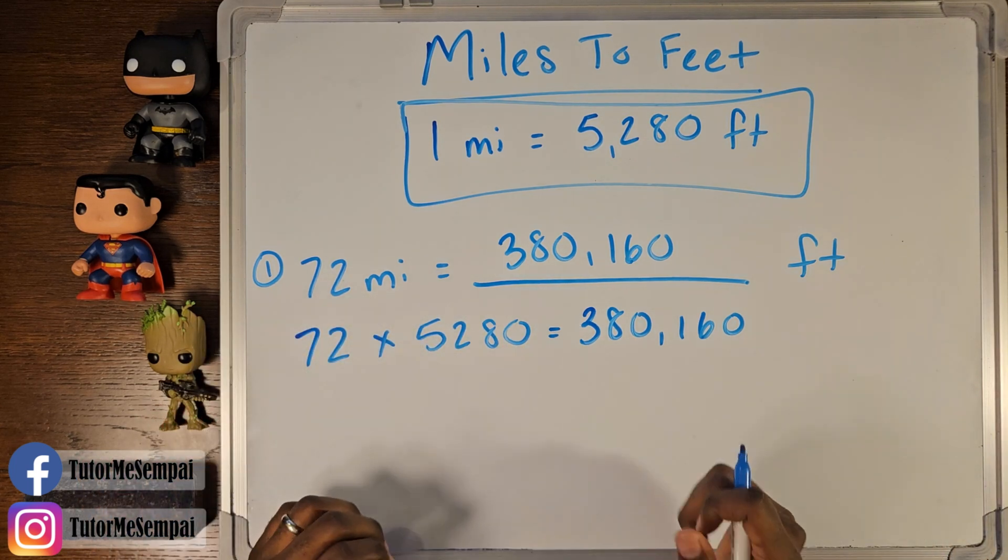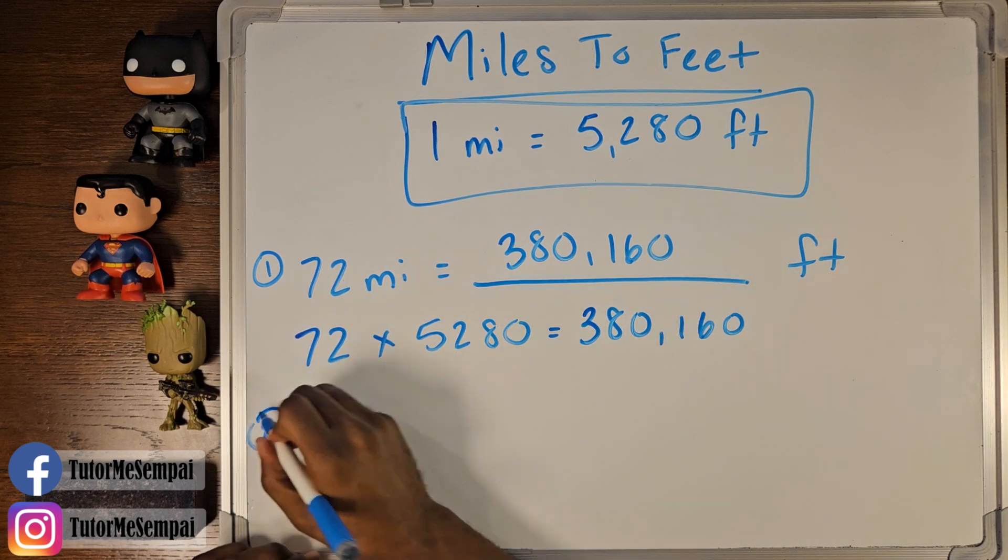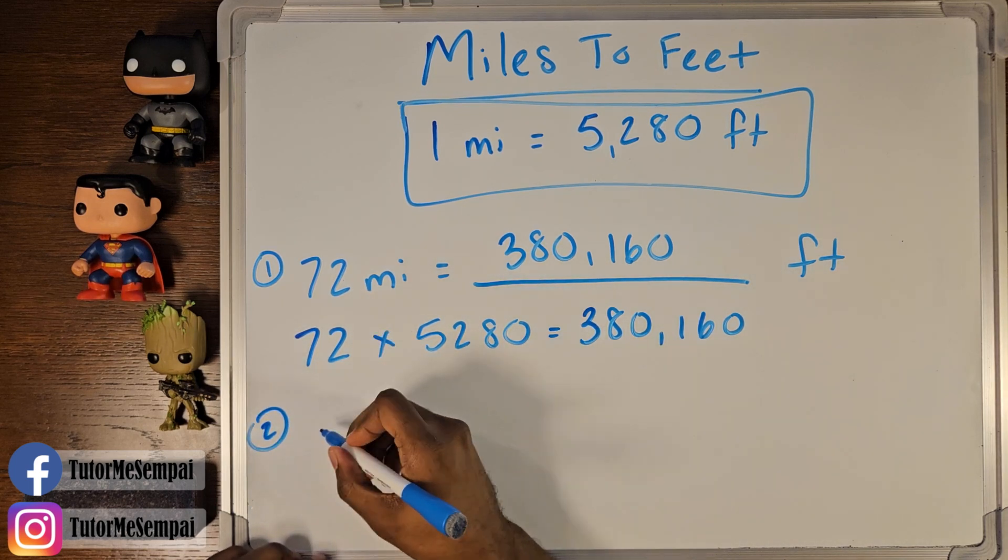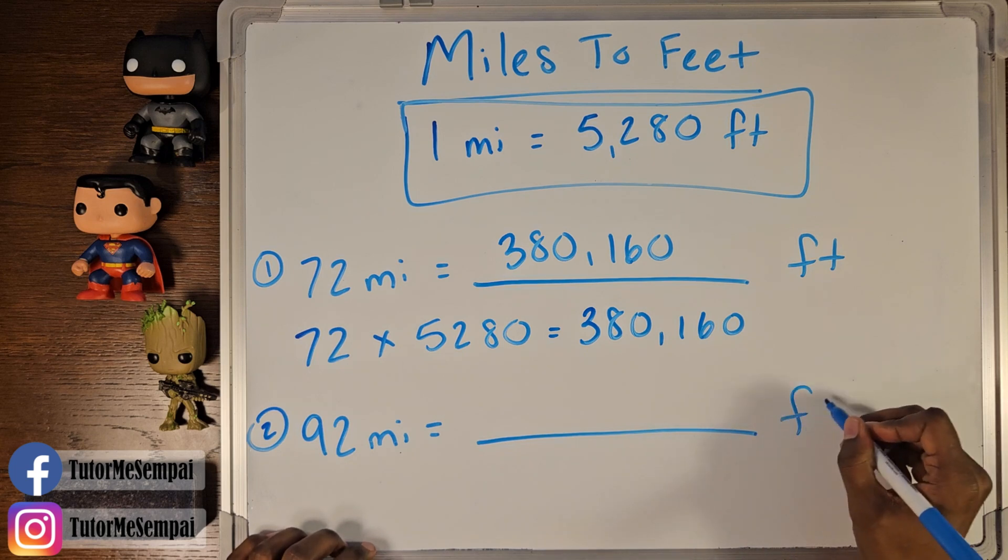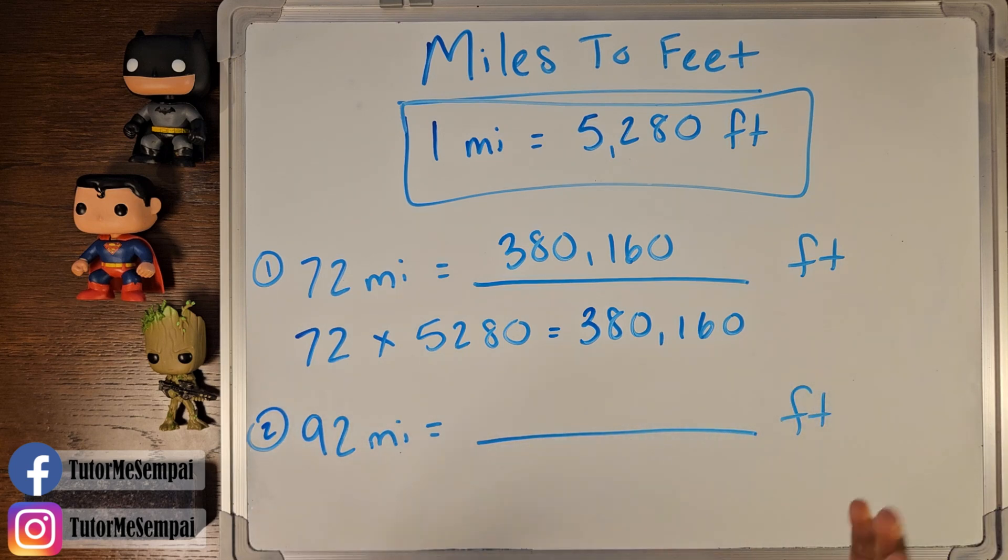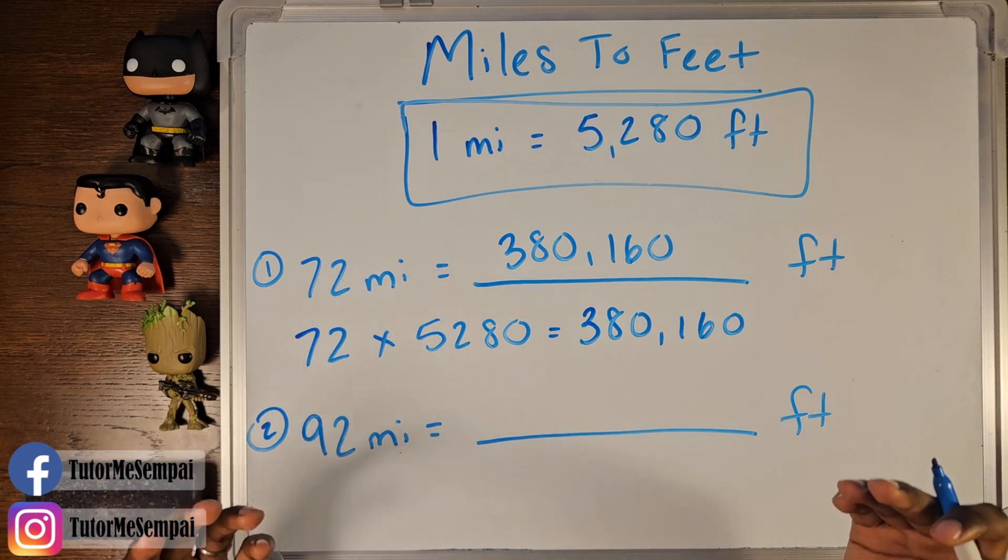We're not afraid of big numbers. So let's do another example with a slightly bigger number. Let's say instead of 72 miles, we have 92 miles. Does that make this a little harder? Not really. Maybe a little bit more work, but not necessarily too hard. What are we going to do when we have 92 miles and we're trying to figure out how many feet that gives us? We're going to do the same exact thing.